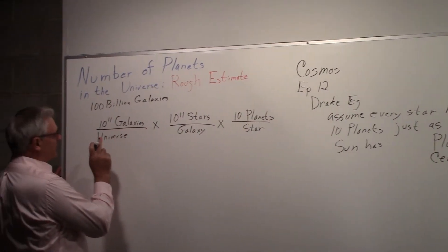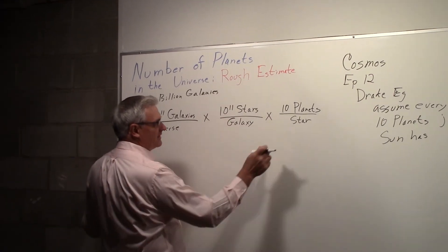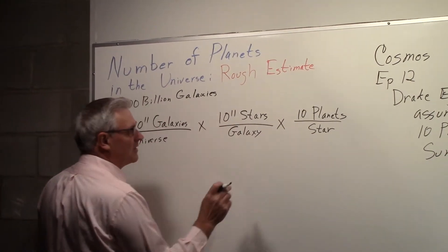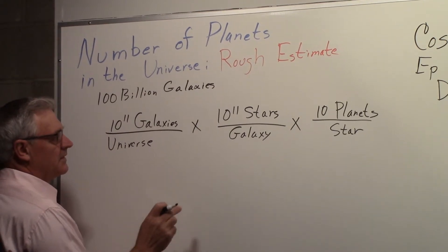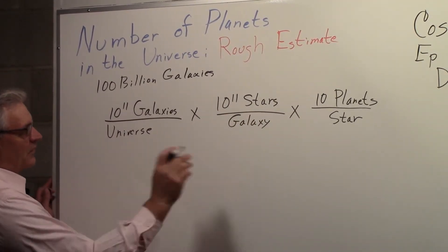So, we have ten to the eleventh galaxies in the universe, ten to the eleventh stars in each galaxy, and we're going to say ten planets per each star. So if we work this out...